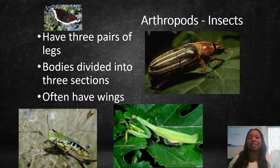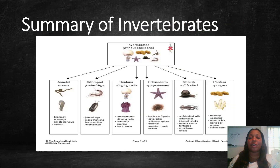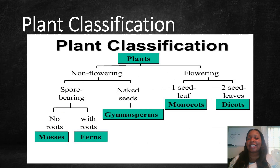Let's go over a quick summary of invertebrates. Remember, these animals have no backbone. There are annelid worms, arthropods, cnidarians, echinoderms, mollusks, and sponges. Are you guys still taking notes? I hope so, because we're on to plant classification. Plants can be divided into two groups: non-flowering plants and flowering plants.